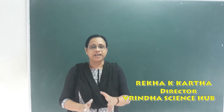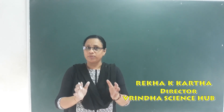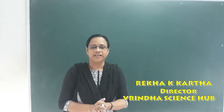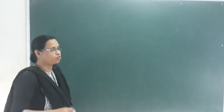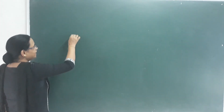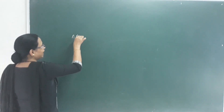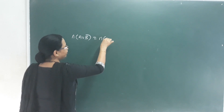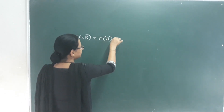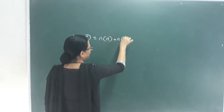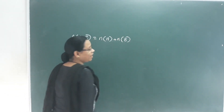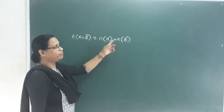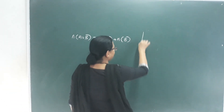Next topic is Practical Problems on Union and Intersection. The number of A union B is equal to the number of A plus the number of B, when A and B are disjoint sets.